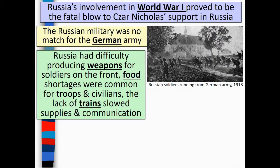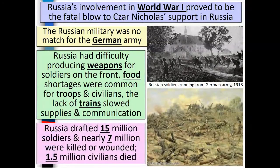Russia's involvement in World War I proved to be the fatal blow to Tsar Nicholas's support in Russia. The Russian military was no match for the German army. Russia had difficulty producing weapons for soldiers on the front, food shortages were common for troops and civilians, and lack of trains slowed supplies and communication. Russia drafted 15 million soldiers, and nearly 7 million were killed or wounded. 1.5 million civilians died.